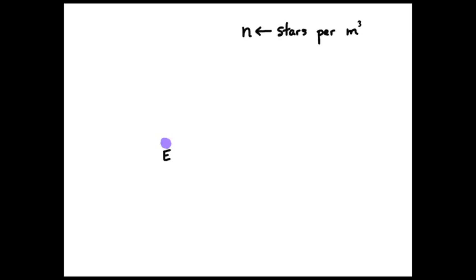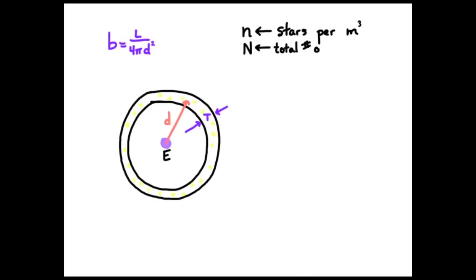Olber started off with Newton's idea that the universe is uniform. So here he lets N represent the number of stars per meter cubed. This of course would be a very small number indeed. Let's imagine a spherical shell of thickness t and distance d away from the Earth. And that shell is filled with stars. And we can think of the brightness of any star given by its luminosity and its distance from Earth. So we'll let capital N represent the total number of stars in the shell. And if that's the case, then capital N equals small n times 4 pi d squared times t. Now that last part, 4 pi d squared times t, would be the volume of that spherical shell.